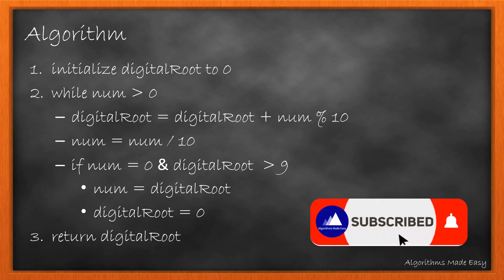If the number becomes 0 and digital root is still greater than 9, we make it as our new number and continue the operations. At the end, we return the digital root.